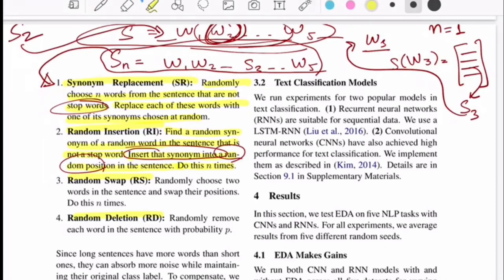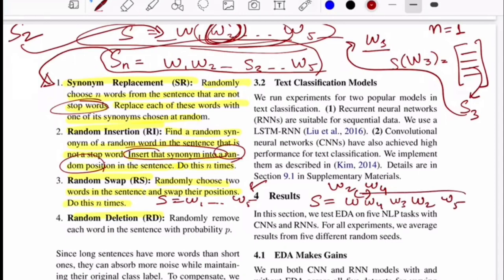Talking about the third rule, randomly choose two words in a sentence and swap their positions. You do this n number of times. If you have a sentence S that is w1 to w5 and you choose two words, let's say w2 and w4, then you swap them in the original sentence. So the augmented sentence becomes w1, w4, w3, w2, w5.